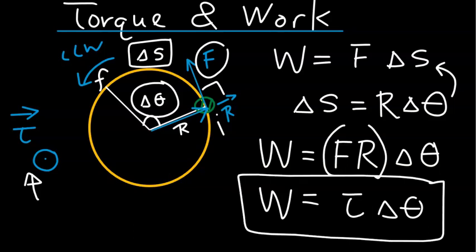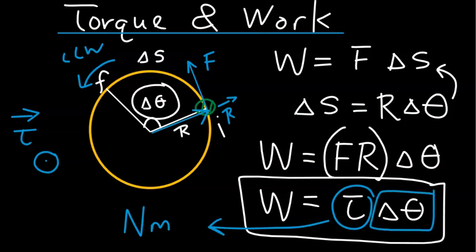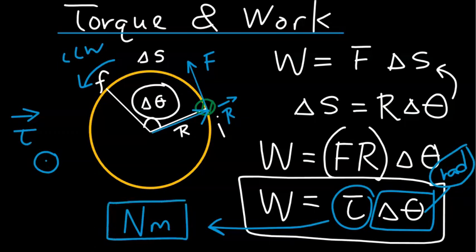So this equation in the box can be viewed as the work done by this torque on the body as it rotates the body an angular distance delta theta. Let's check the units. Torque is quantified in the unit of newton meter. Delta theta is quantified in the unit of radians, and radians have no dimensions. So the unit for work is indeed just newton meter, or joules, as we have seen before.